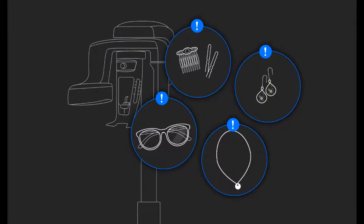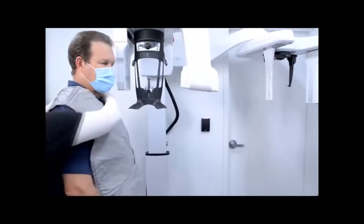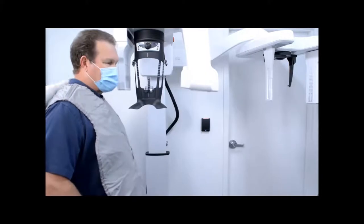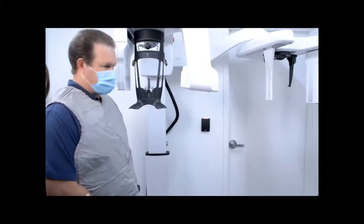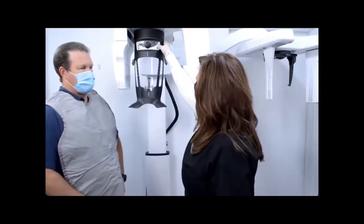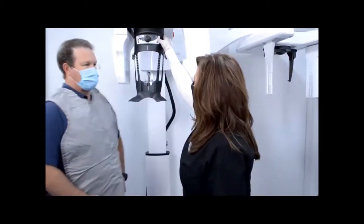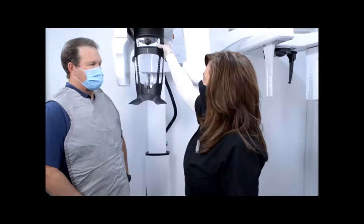Before the patient enters the unit, ask the patient to remove any metal objects above the neck, including jewelry, glasses, hearing aids, prosthesis, metal hair clips, or other metal objects. Place the lead apron on the patient and instruct the patient to stand next to the unit. Next, adjust the unit to the patient's height. The CS8200 3D can be easily adjusted for patients standing or sitting, and is wheelchair accessible.